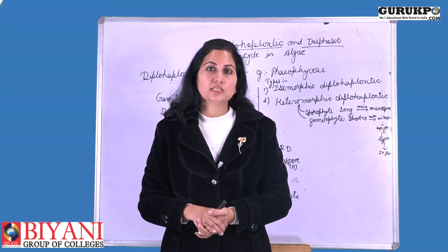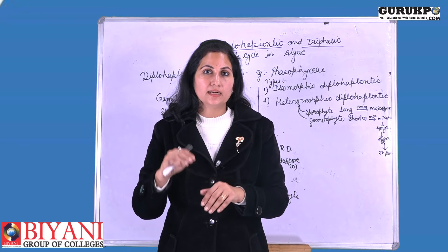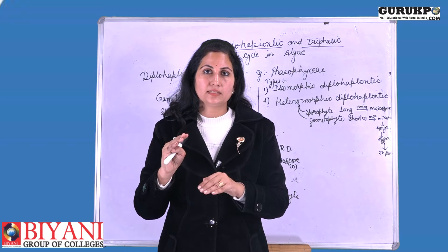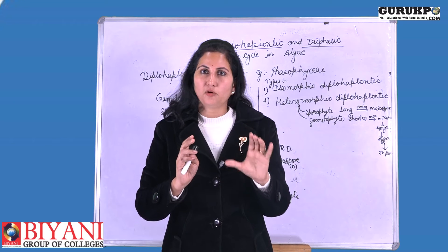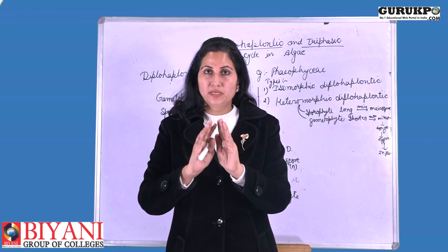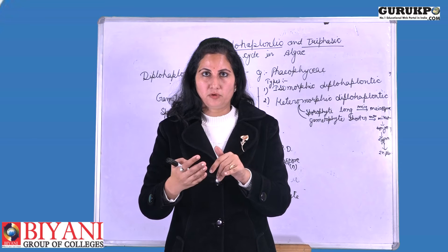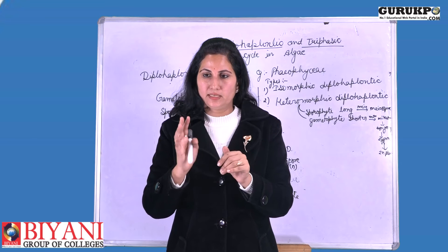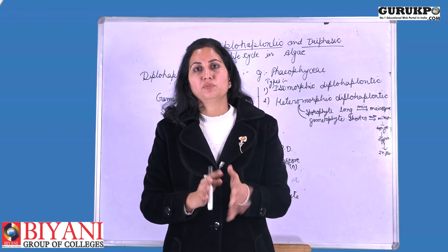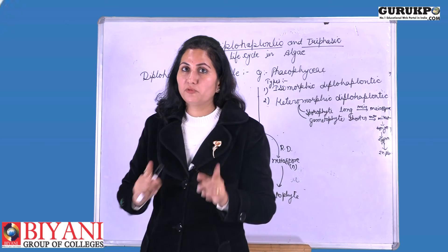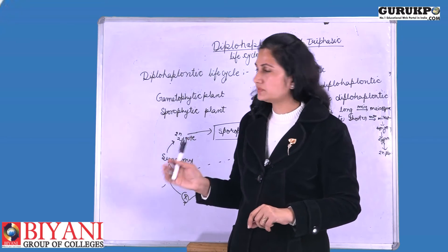In the heteromorphic haplodiplobiontic life cycle, the sporophytic plant is larger in size compared to the gametophytic plant. Gametophytic plants are always shorter in size. So we can observe just by looking at them morphologically that this is the sporophytic plant and this is the gametophytic plant. Now I have drawn a diagram here on the board of the life cycle.